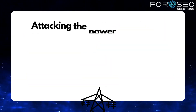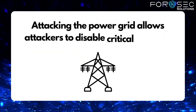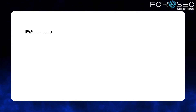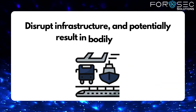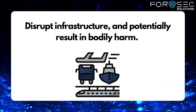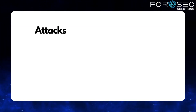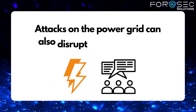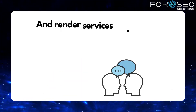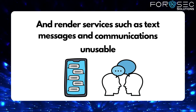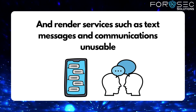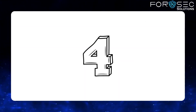Attacking the power grid allows the attacker to disable critical systems, disrupt infrastructure, and potentially result in bodily harm. Attacks on the power grid can also disrupt communication and render services such as text messages and communication unusable.